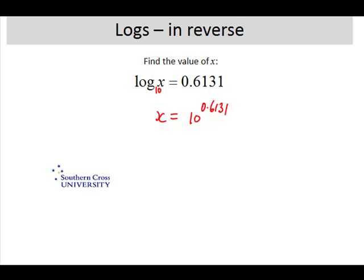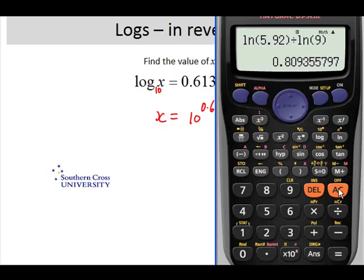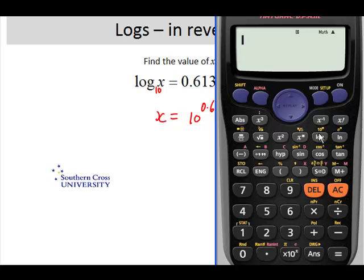Now when we bring up the calculator, you'll notice that 10 to the something button is located on the same button as what log is, but you need to press shift in order to get that. So we simply go shift and press the log key and you'll get 10 to the something, and we need to write the something in. And it's 0.6131 and equals.